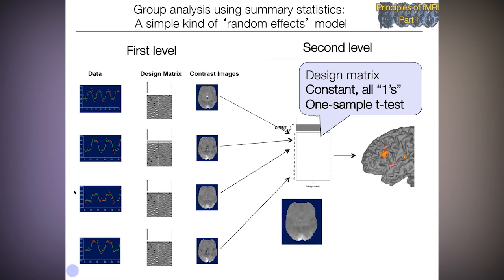So this is a group analysis using a summary statistics approach, which is a simple kind of random effects model. And this is the one that's used most of the time. So on the left, what you see is a first level analysis, which is a GLM within each person. And I take that forward to find a contrast and come up with a contrast image for each person.